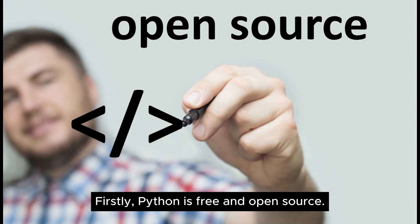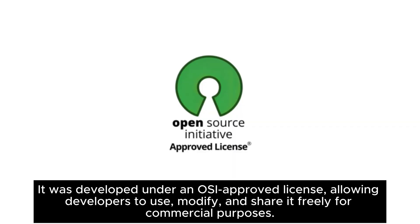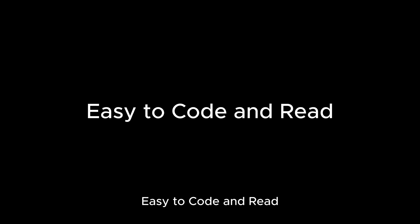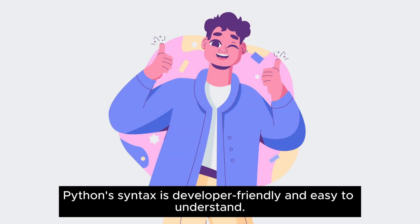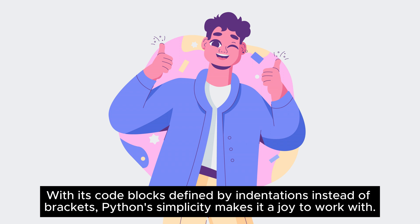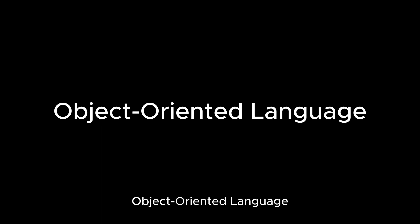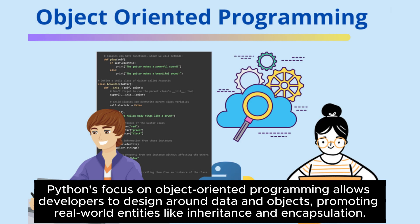Let's look at the advantages of using Python. First, Python is free and open source, developed under an OSI-approved license, allowing developers to use, modify, and share it freely for commercial purposes. Python's syntax is developer-friendly and easy to understand, with code blocks defined by indentations instead of brackets, making it a joy to work with. Python's focus on object-oriented programming allows developers to design around data and objects, promoting real-world entities like inheritance and encapsulation.